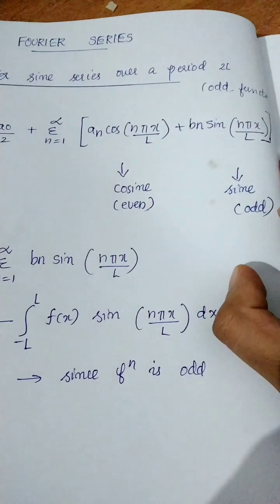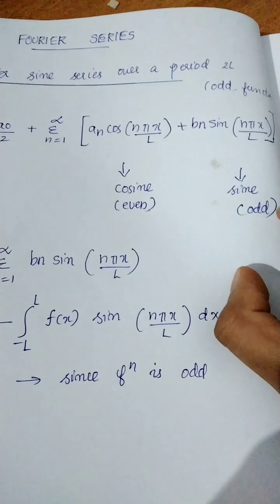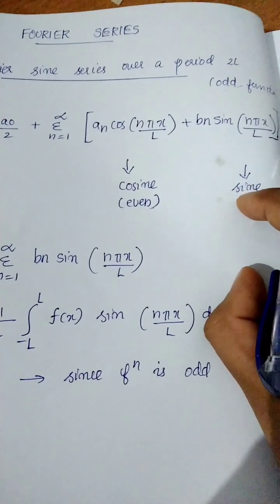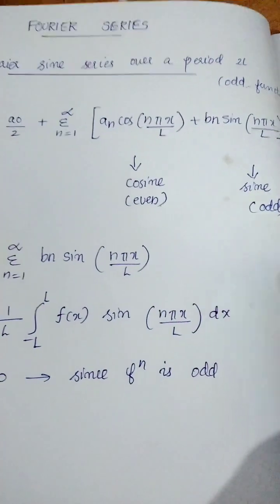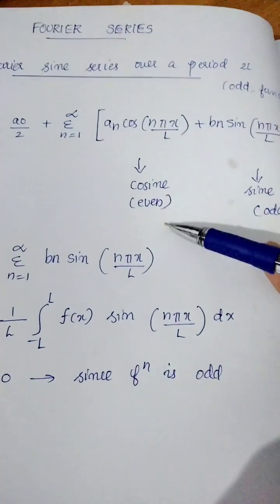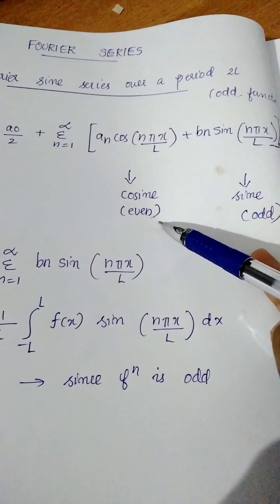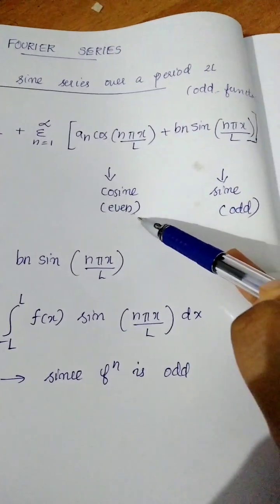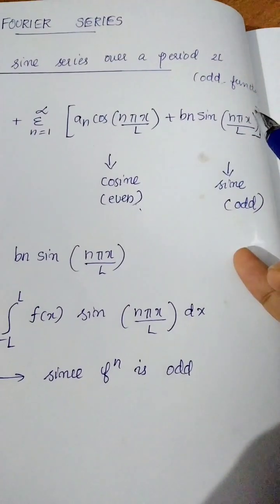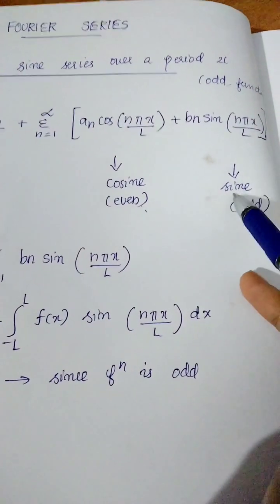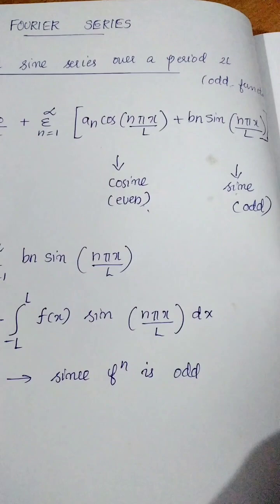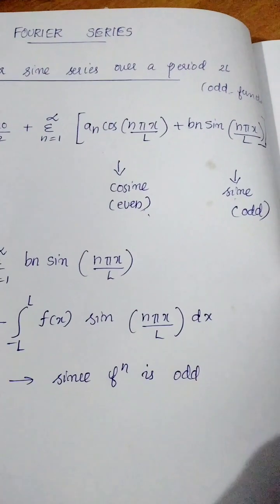We will use a function. If the function is even, we will use a Fourier cosine series. If it is odd, we will do a sine Fourier series.